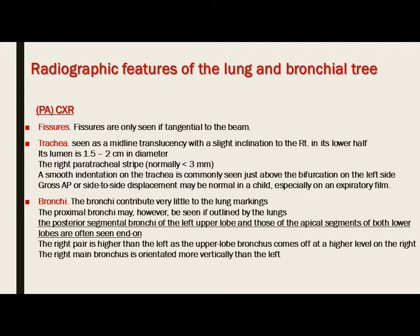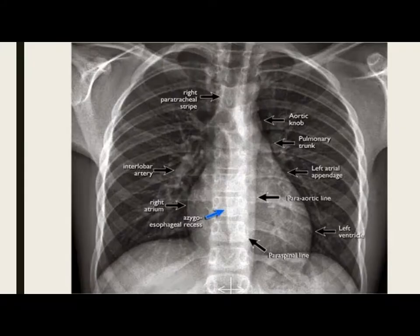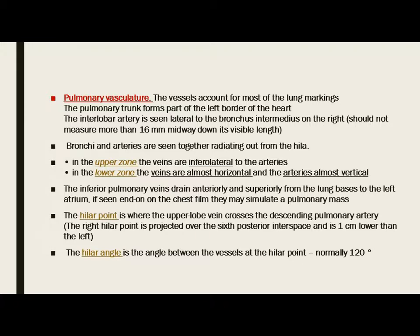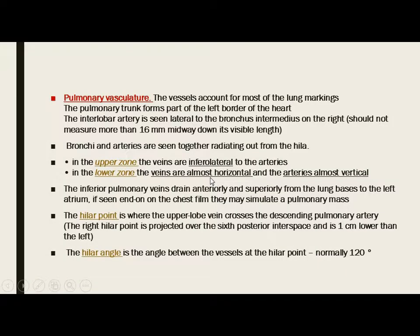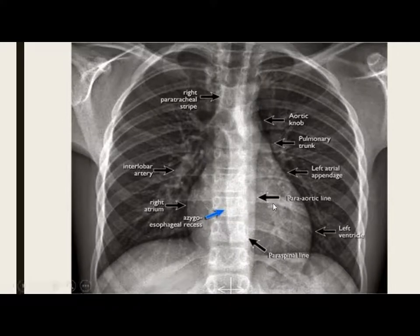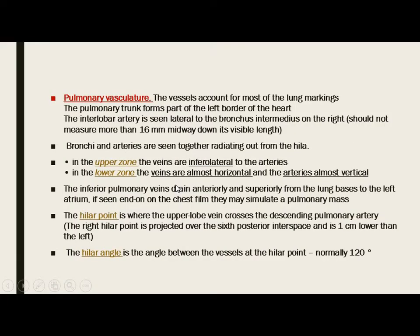The proximal bronchi may be seen if outlined by the lungs — specifically the posterior segmental bronchi of the left upper lobe and those of the apical segments of both lower lobes. The right pair is higher than the left, as the upper lobe bronchi comes off at a higher level on the right. The right main bronchus is oriented more vertically than the left. The pulmonary vasculature accounts for most of the lung markings. The pulmonary trunk forms a part of the left border of the heart. The interlobar artery is seen lateral to the bronchus intermedius on the right side and should not measure more than 16 mm.